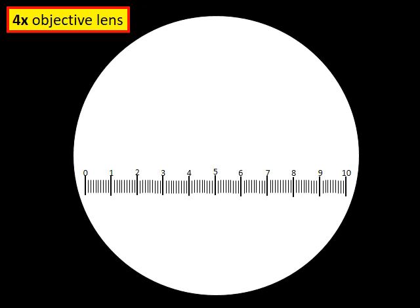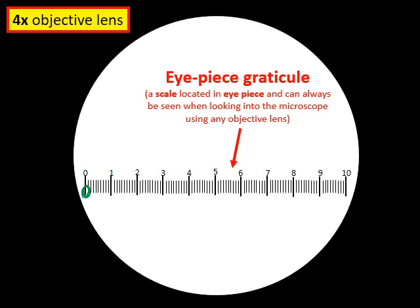Before placing any slide on the stage, if we look down the microscope we will see the eyepiece graticule. The scale runs from 0 to 10, but is divided into 100 small units. We are interested in these small divisions — each one is one eyepiece graticule unit. There are 100 small units in total, and we want to work out what a single tiny eyepiece graticule unit is actually worth.